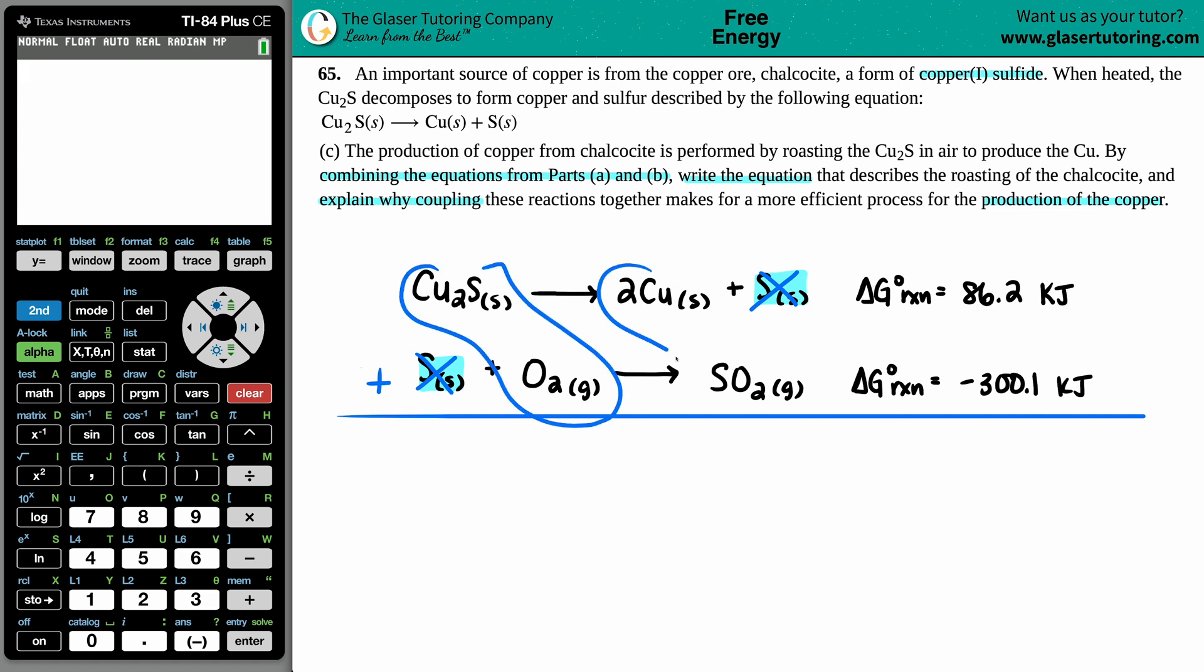Can I cancel out anything else? Nothing else is the same. So now I just gather up my reactants, gather up my products, and write one nice equation. The resulting equation is Cu₂S—it doesn't matter which one you say first, I'm just gonna go from top to bottom—Cu₂S plus oxygen gas yields...